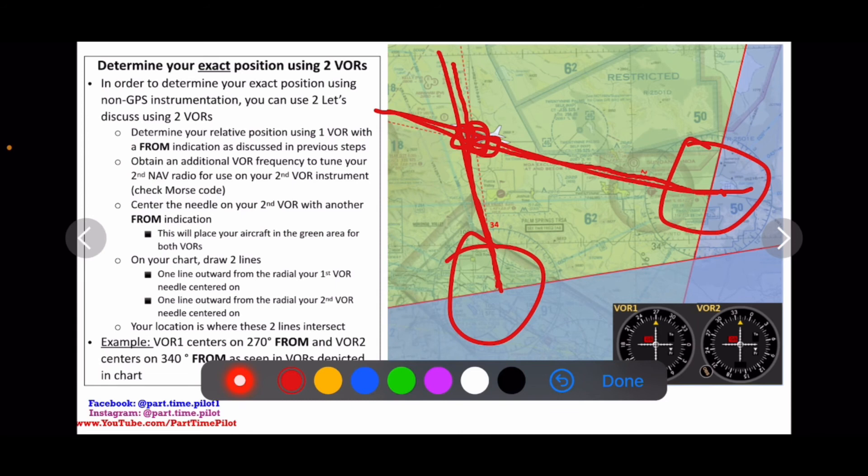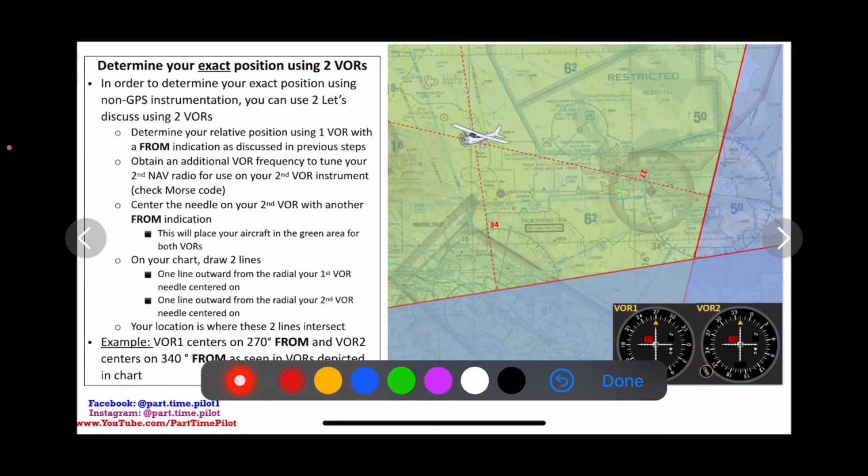Then what we can do is we can verify that by finding something close by on the map. So for example, as we're circling around, we might see this airport off in the distance and we might say, okay, that matches, or maybe it's this airport, or maybe it's a mountain over here, some physical feature to verify that the process we've just done is correct.